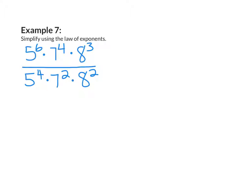Example 7: Simplify using the law of exponents. In this example, my numbers are not coefficients — they are bases. The way I can tell is that if I had coefficients, I would have variables right after them. So these bases will remain the same. I'm going to go through each one and subtract. So 5 to the power of 6 and 5 to the power of 4: 6 take away 4 gives me 2. My next base, 7: 4 take away 2 gives me 2. My next base is 8: 3 take away 2 gives me 1. So my answer will be 5 squared times 7 squared times 8.